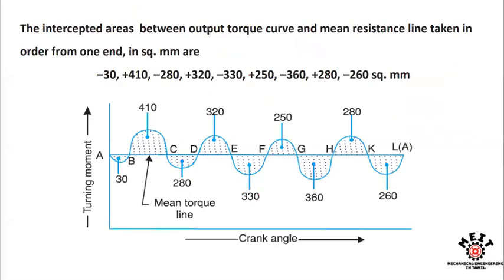Next, we need to find the fluctuation of energy, which is very important. From the given data, we refer to the turning moment diagram that has already been described.